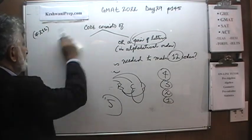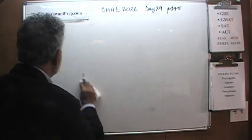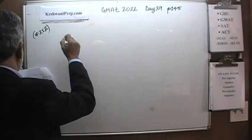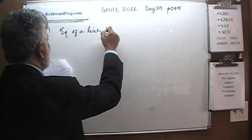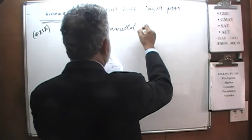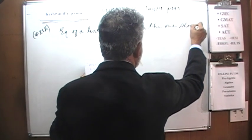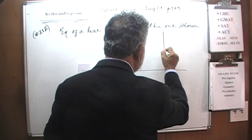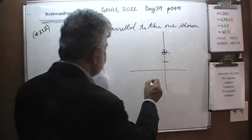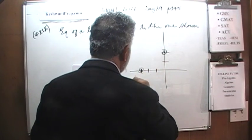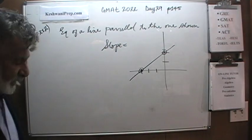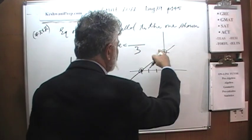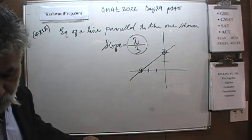Number 212. We are told to find the equation of a line parallel to the one shown. What is shown in the picture is a line that goes through y = 2 and cuts the x-axis at negative 3. That means the slope of this line is: the run goes from −3 to 0, that's 3, and the rise is 2 — so the slope is 2/3.